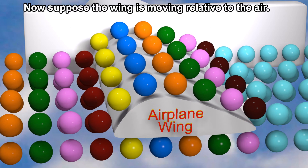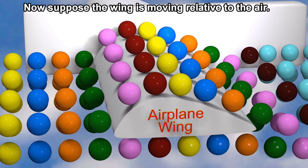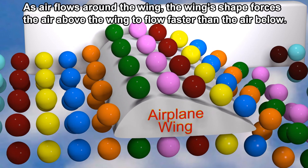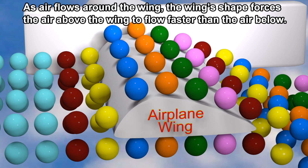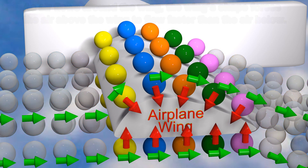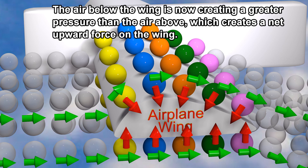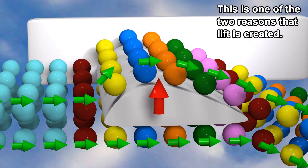Now, suppose the wing is moving relative to the air. As air flows around the wing, the wing's shape forces the air above the wing to flow faster than the air below. The air below the wing is now creating a greater pressure than the air above, which creates a net upward force on the wing. This is one of the two reasons that lift is created.